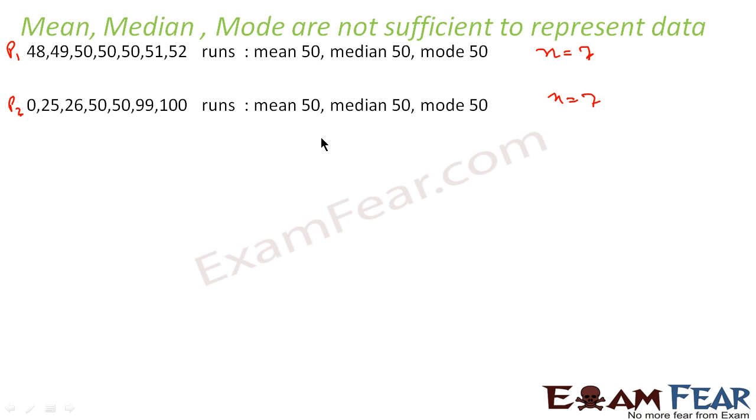If you want to find the mean, it will come out to be 50 for both. If you add these all, this becomes 350 divided by 7 equals 50. For Player 2 also: 25 plus 26 is 51, 51 plus 50 is 101, this becomes 350 divided by 7 equals 50.